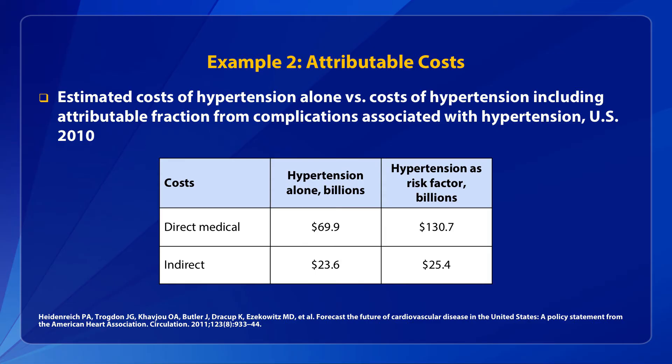Here is an example from an American Heart Association study that examined the total costs of CVD in the U.S. The authors estimated that in 2010, the direct medical costs of treating hypertension alone were $69.9 billion, and indirect costs from lost productivity were $23.6 billion. But when they added a portion of the costs of complications associated with hypertension — including coronary heart disease, stroke, and other forms of CVD — the direct medical costs attributable to hypertension almost doubled.